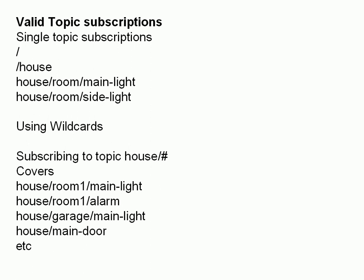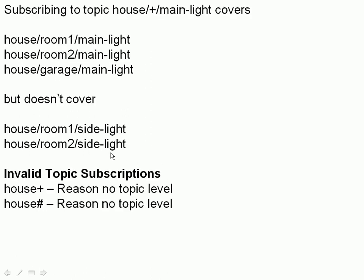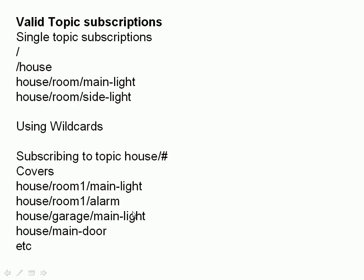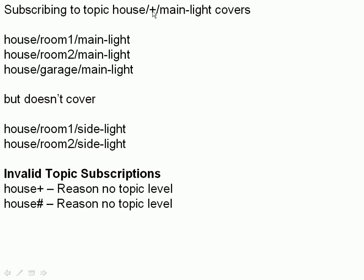Here are some valid single-topic subscriptions: you can subscribe to the root, 'house', 'house/main-light', or 'house/room/side-light'. Using wildcards, subscribing to 'house/#' would subscribe you to all of those topics, since they all start with 'house'. Subscribing to 'house/+/main-light' would subscribe you to topics like 'house/room1/main-light', 'house/room2/main-light', and 'house/garage/main-light', where the plus sign covers that single room-level segment. It would not cover 'house/room1/side-light' because 'side-light' is not 'main-light'.